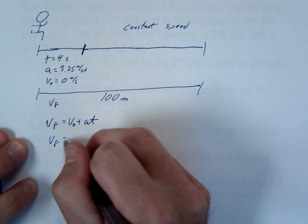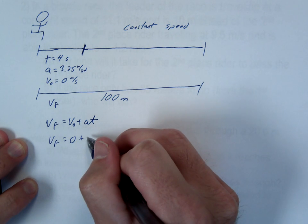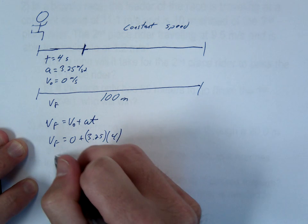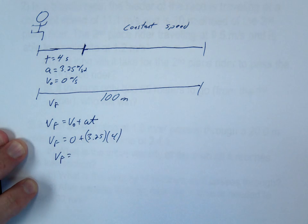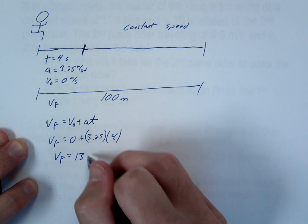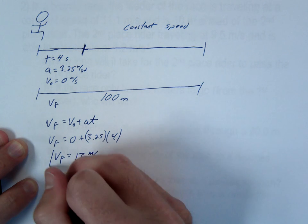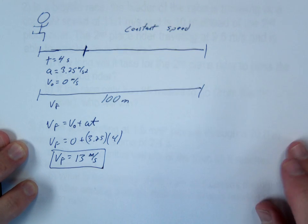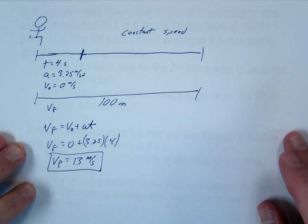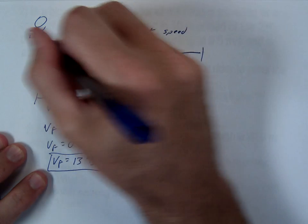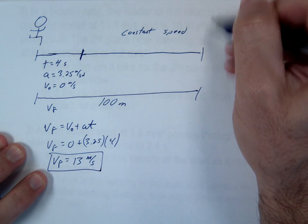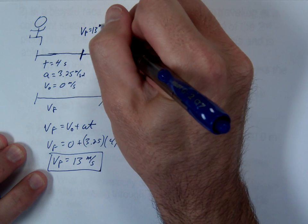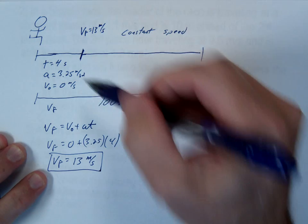Vf equals 0 plus 3.25 times 4. The answer is 13 meters per second. It's good, once you've done this, to write that on your picture. That final is not at the end, right? That final is right here. His V final right here is 13 meters per second at this moment in time.